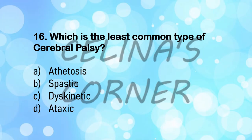Question number 16: which is the least common type of cerebral palsy? Cerebral palsy is of certain types: athetosis, spastic, dyskinetic, ataxic — all these are types. Out of these, spastic is the most common and ataxic, which is also known as ataxia, is the least common type of cerebral palsy.